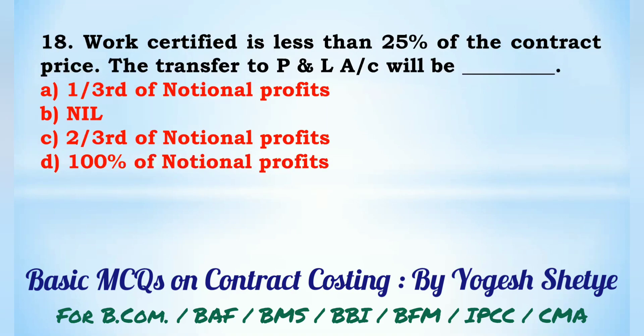Question 18: When work certified is less than 25% of the contract price, the transfer to profit and loss account will be — (A) 1/3rd of notional profit, (B) 2/3rd of notional profit, (C) 100% of notional profit, (D) nil. The amount transferred to profit and loss account will be nil. Answer: D.